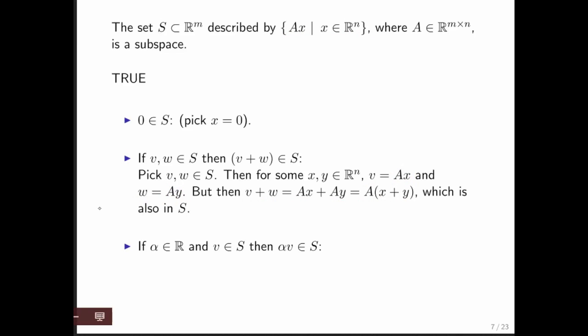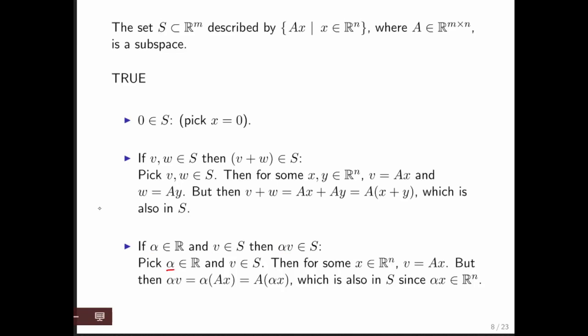Similarly, if you start with a vector V in the set and a scalar alpha, we ask the question, is alpha times V in the set? But if you pick an arbitrary alpha and an arbitrary V, then we know that there is some X such that V is A times X, because otherwise V would not be in this set right here. And if you then look at alpha times V, that's alpha times A times X, but you can take that scalar and move it inside, and you get this right here. And what that means is that there is a vector, namely the vector alpha times X, that maps to the vector alpha times V. And therefore, we conclude that this is a subspace.